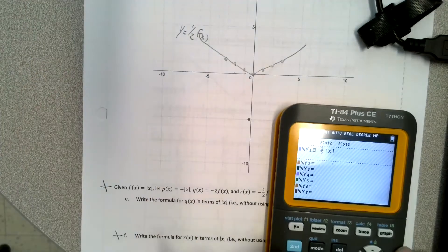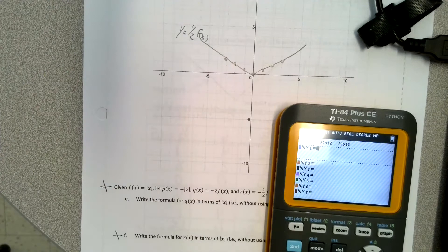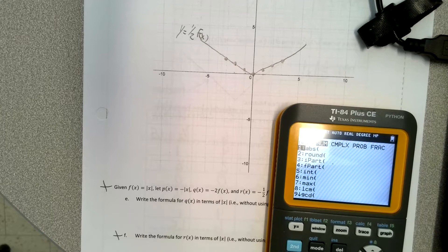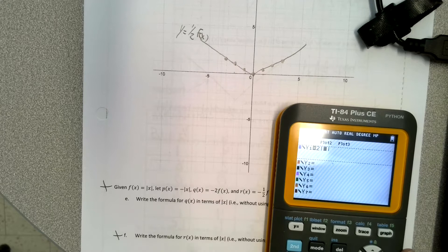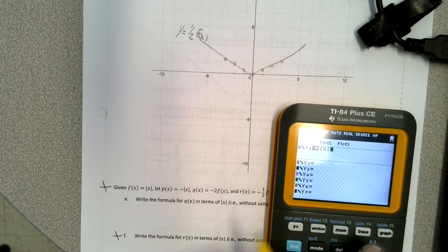And now I'm going to go back to this one. I'm going to clear this out. I'm going to put the 2. I'm going to go to math, num, abs. I'm going to put the X in, arrow out of it, graph.